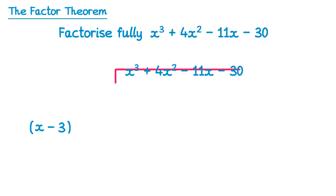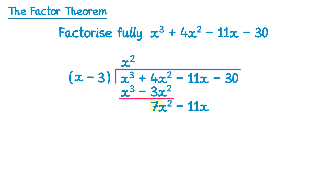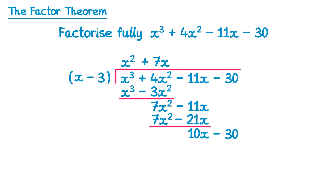We set up a bus stop with the cubic inside and the linear factor outside. x cubed divided by x gives x squared. Multiply back through: x squared times x is x cubed, x squared times negative 3 is negative 3x squared. Subtract — the x cubed terms cancel, and 4x squared take negative 3x squared is 7x squared. Bring down the next term. 7x squared divided by x is plus 7x. Multiply back: 7x times x is 7x squared, 7x times negative 3 is negative 21x. Subtract — the 7x squareds cancel, and negative 11x take negative 21x is 10x. Bring down the final term. 10x divided by x is plus 10. Multiply back: 10 times x is 10x and 10 times negative 3 is negative 30. Subtracting gives 0.